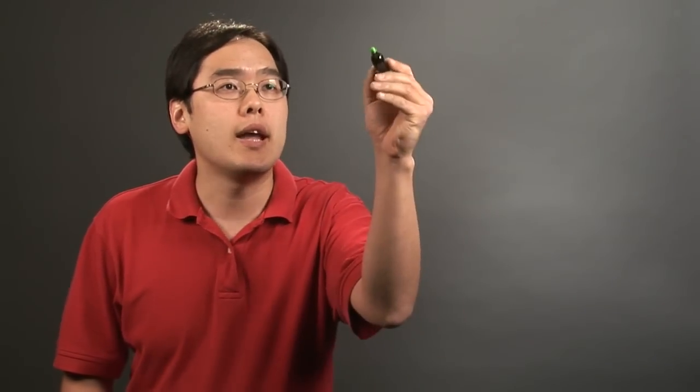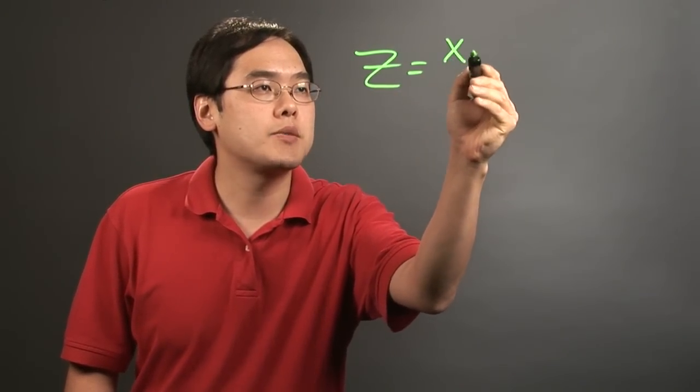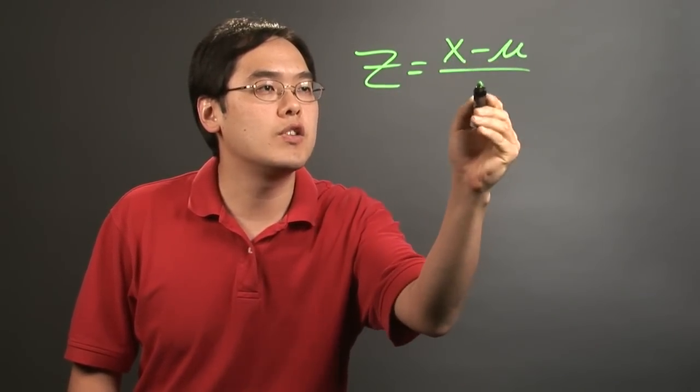Now, z-values can be thought of as z-scores, and there's actually a formula associated with that. So let's talk about what it might be. The formula here is going to be z is equal to x minus mu over sigma.